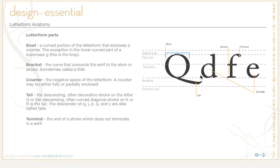A tail is the ascending, often decorative stroke on the letter Q, or the descending, often curved diagonal stroke on a capital K or a capital R. These are also referred to as the tail. The descenders on lowercase g, j, p, q, and y are also called tails. And a terminal is the end of a stroke which does not terminate in a serif.